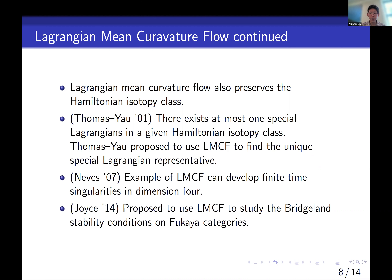However, this may not be as easy as initially thought. An example by Neves shows that Lagrangian mean curvature flow can develop finite-time singularities even in dimension four. Joyce proposed that one can use Lagrangian mean curvature flow to study the so-called stability conditions on Fukaya categories, which is an important invariant of symplectic manifolds.